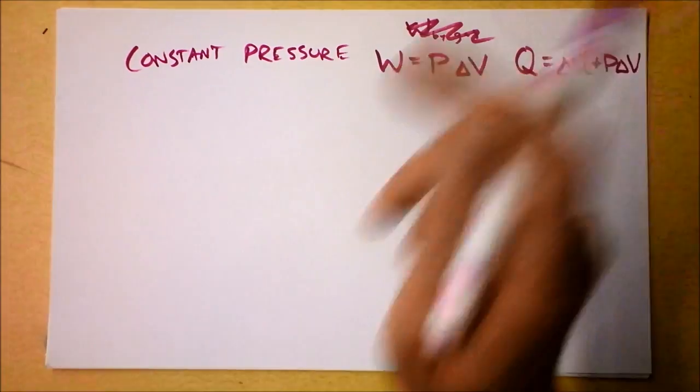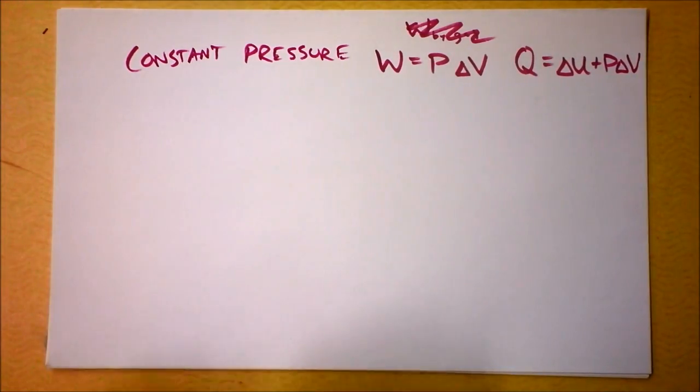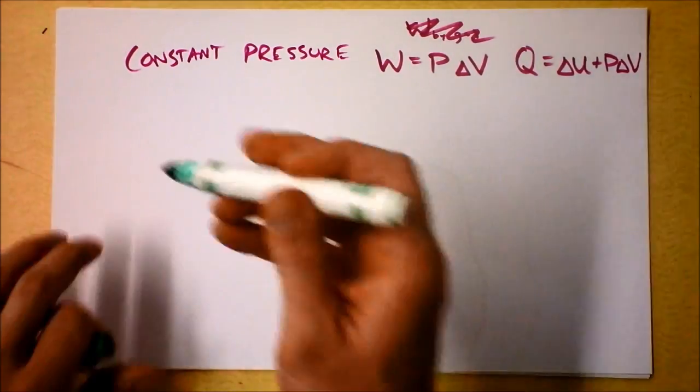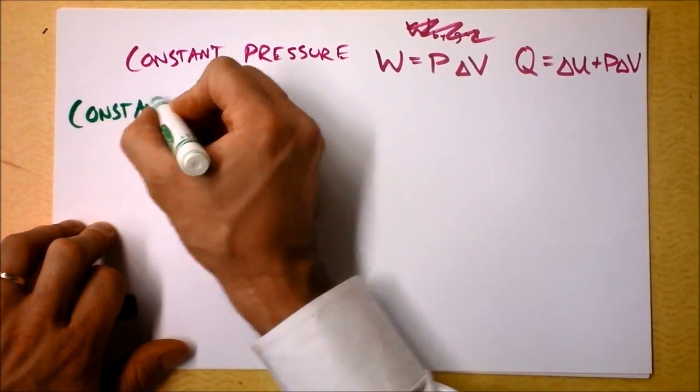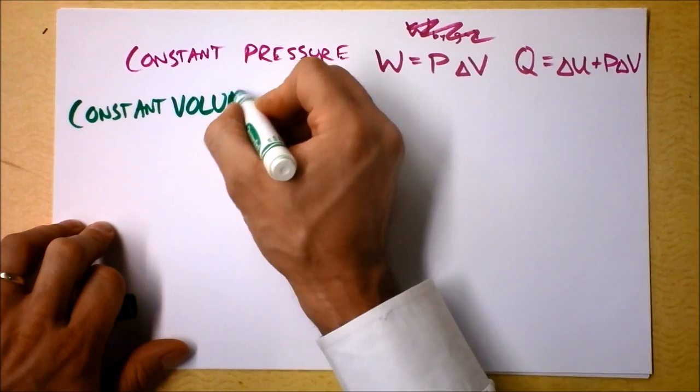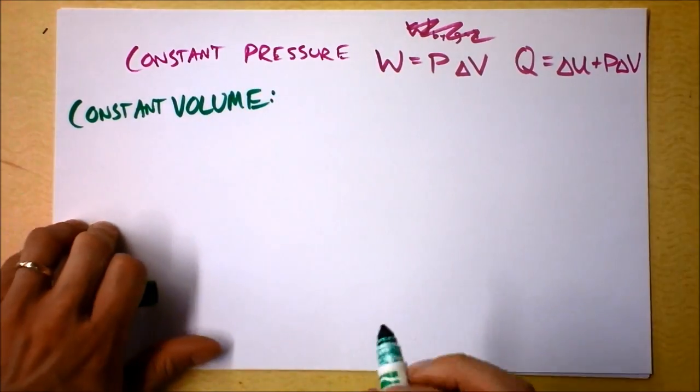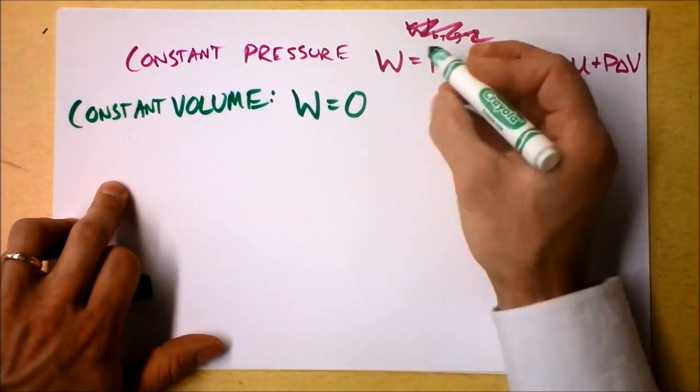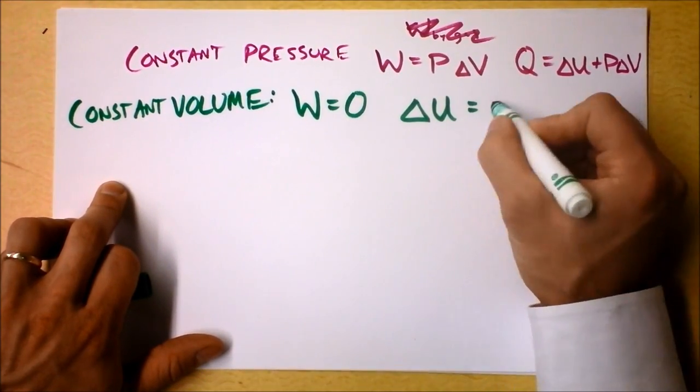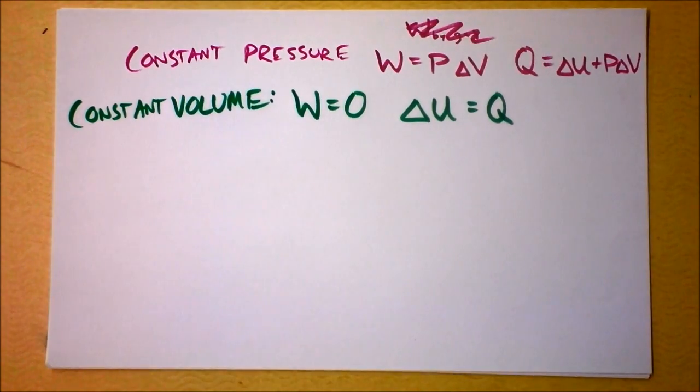Then we'll talk about constant volume, which is super boring. Constant volume has these characteristics where it can't do anything. And if you want to change the energy of the system, then you have to put heat into it.